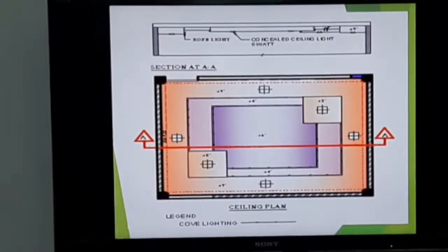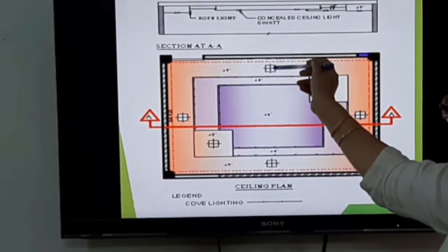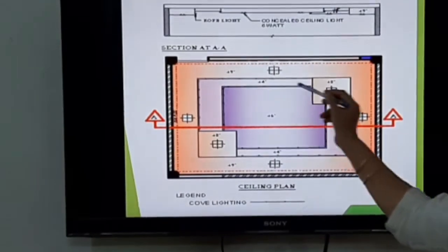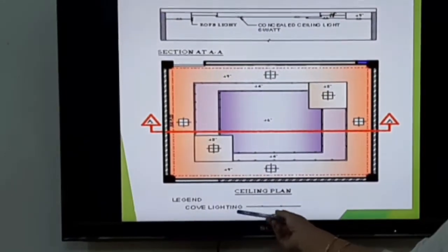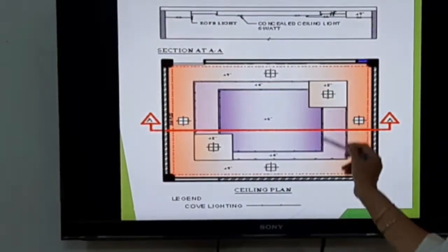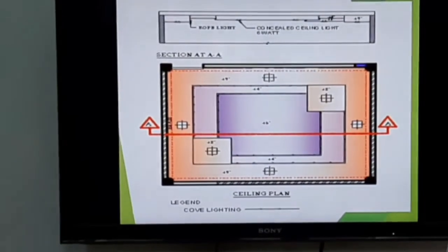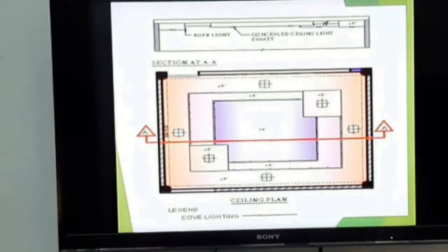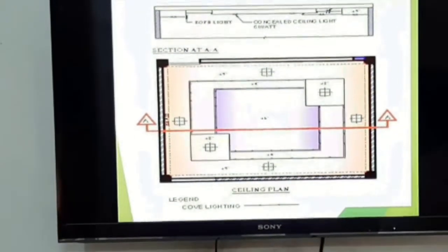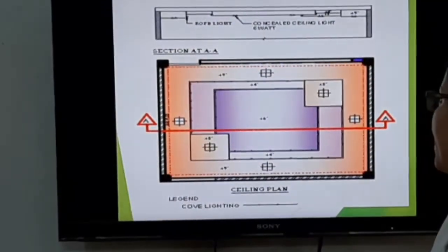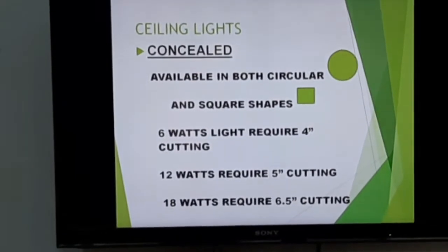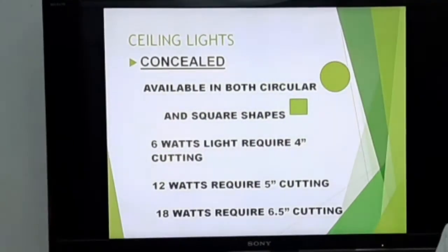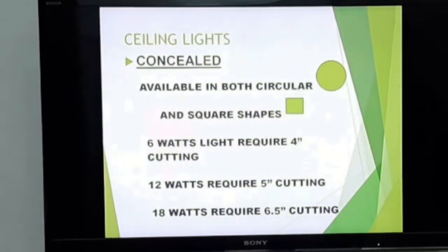We can show the ceiling lights in the legend below — this is cove lighting. Cove lighting is where the light source is completely hidden and only the reflected light is visible. I have told you that one type is concealed light and one is cove lighting.